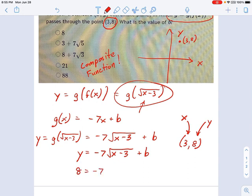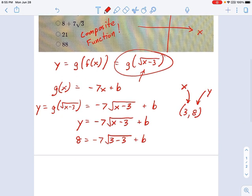You say 8 equals negative 7 times x equals 3 minus 3 plus b. Well, now we have an equation with just numbers in it and a letter b, which we're going to figure out.